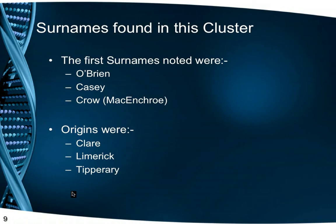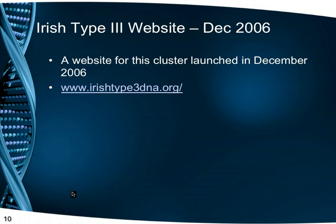The first surnames that were noted were O'Brien, Casey and Crowe. Where their origins were known, they came from the counties of Clare, Limerick and Tipperary. As no one else was researching this cluster, I set up a website 10 years ago in December 2006.